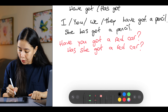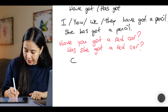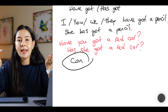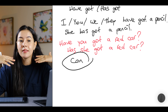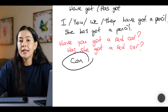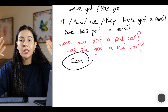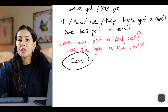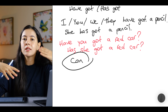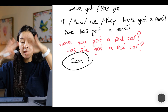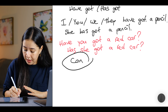Now let's continue with 'can'. Do you remember 'can'? We use 'can' when we talk about our abilities — the things that we can do. For example: I can cook well. I can speak English. I can speak Russian. I can speak French. I can dance. I can sing a song. These are my abilities.